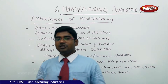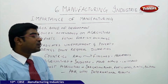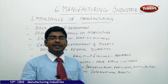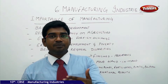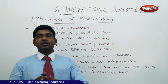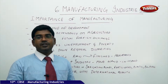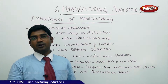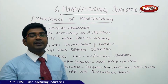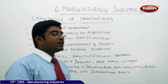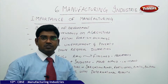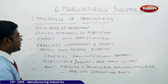When a country's people are employed in the secondary sector — where manufacturing industries fall — that country is automatically categorized as developing or developed rather than underdeveloped. So first we need to understand what is the importance of manufacturing industries, then we can understand how it contributes to the country's development on a larger scale.